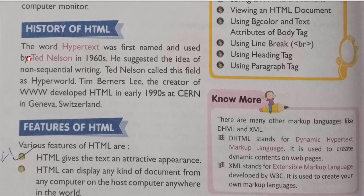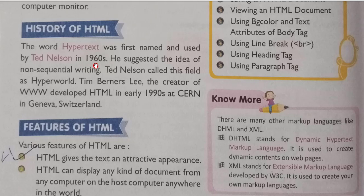Now, the history of HTML. The word 'hypertext' was first named and used by Ted Nelson in the 1960s. He suggested the idea of non-sequential writing. Tim Berners-Lee, the creator of the World Wide Web, developed HTML in the early 1990s at CERN in Geneva, Switzerland. Hypertext refers to text displayed on a web page that, when clicked, moves you to another page.